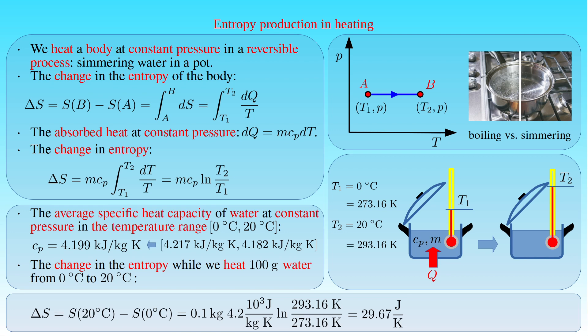If we choose the entropy of 100 grams of water at 0°C as the zero point of the entropy of water, then we can state that the entropy of 100 grams of water at 20°C is equal to about 30 J/K.